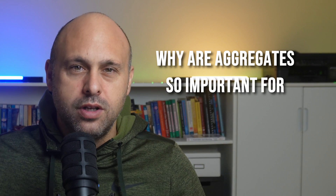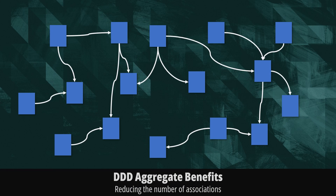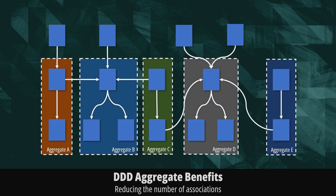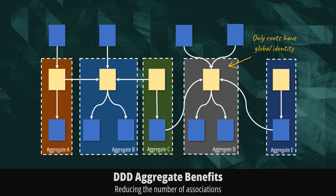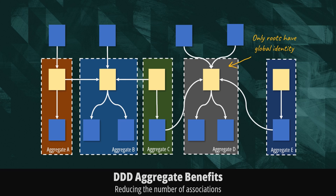But why are aggregates so important for building software that stands the test of time? The first compelling reason for using aggregates is their ability to streamline complex relationships and reduce the number of associations. Associations can be intricate to implement and can make a model difficult to understand. By introducing aggregates, we effectively compartmentalize related objects, simplifying the overall structure. Within an aggregate, only the root entity possesses a global identity, serving as the exclusive point of reference for external objects. Any object can hold a reference to an aggregate root, while only the aggregate root can hold references to objects within its boundary.